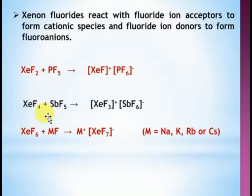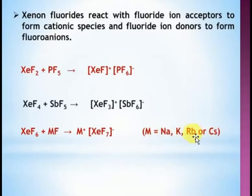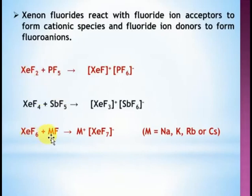Xenon tetrafluoride reacts with antimony pentafluoride (SbF₅), and they form a complex: xenon trifluoride cation and antimony hexafluoride anion, where one fluorine atom is exchanged. Very importantly, xenon hexafluoride reacts with metal fluorides (MF where M = sodium, potassium, rubidium, cesium) — they take one fluorine atom and form a fluoride ion. The more reactive metal gives electrons, and the fluoride ion joins the complex.